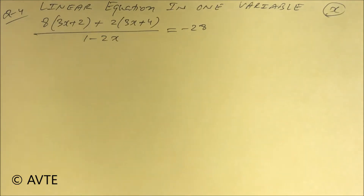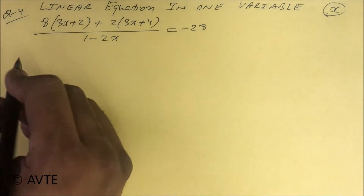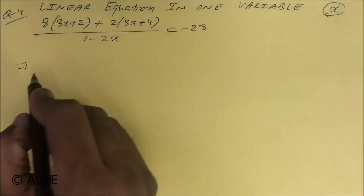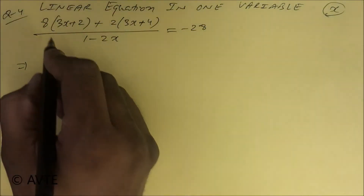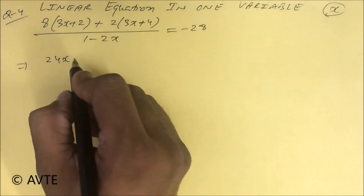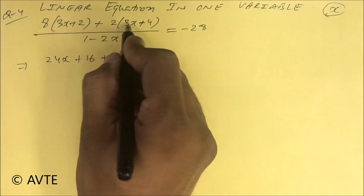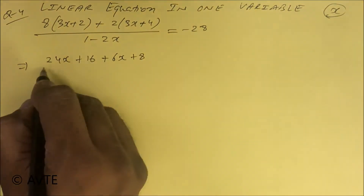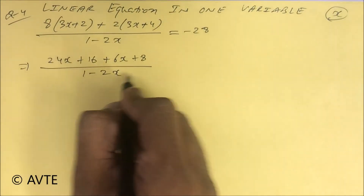Hello friends, now we are doing question number four on the topic linear equation in one variable — how to find the value of x in the given equation. This is a simple question. We get 24x plus 16 plus 6x plus 8 upon 1 minus 2x.